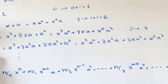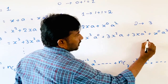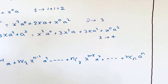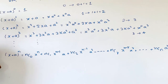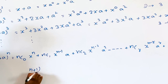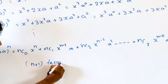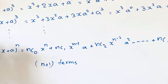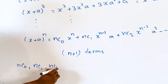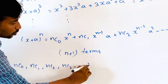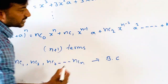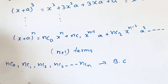In the expansion of (x+a) whole power 3, the number of terms is equal to 4. Similarly, the expansion of (x+a) whole power n contains n plus 1 terms. In the expansion, nC0, nC1, nC2, nC3 and so on up to nCn are called binomial coefficients.